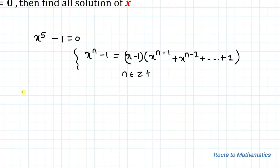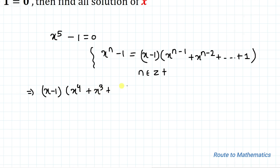So we can write x to the power 5 minus 1 as x minus 1, multiplied with x to the power 4 plus x cubed plus x squared plus x plus 1, equals to 0.